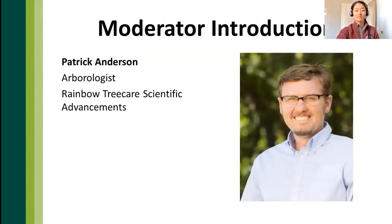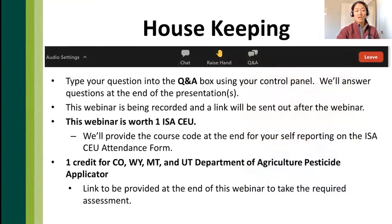Quick housekeeping before we let Seth take over. Please use the Q&A box in your control panel. Try not to use the chat function unless you want to chit-chat — we lose the chat, so if you want a question answered, post it in the Q&A or we may miss it. The webinar will be recorded and a link will be sent out. This webinar is worth one ISA CEU; there will be a code at the end that you'll need to self-report using an attendance form. This is also good for one pesticide applicator credit in Colorado, Wyoming, Montana, and Utah. There will be a link at the end — you'll have to take a five-question quiz and get at least four questions right. Both credits will come at the end of the presentation.